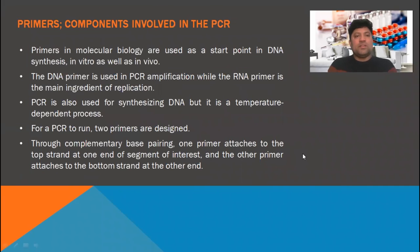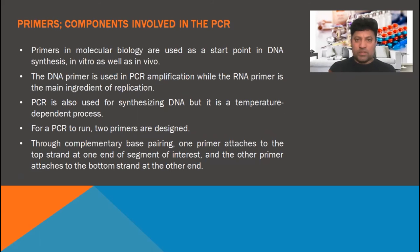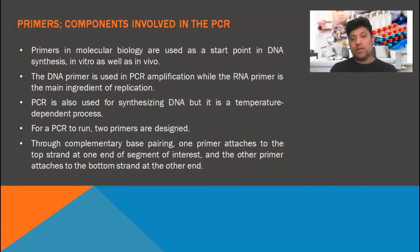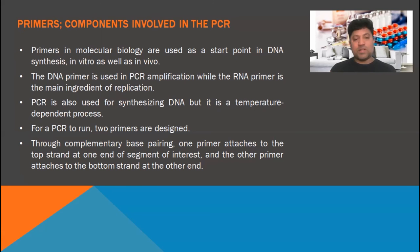The primer component involved in PCR: a primer is a molecule used in molecular biology as a start point in DNA synthesis, in vitro as well as in vivo. The DNA primer is used in PCR applications, while the RNA primer is the main ingredient of replication. DNA polymerase is also used for the synthesis of DNA, but it is a temperature-dependent process. For a PCR to run, two primers are designed through complementary base pairing. One primer attaches to the top strand at one end of the segment of interest, and the other primer attaches to the bottom strand at the other end.